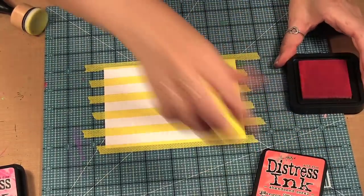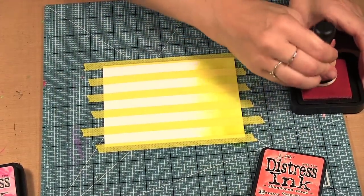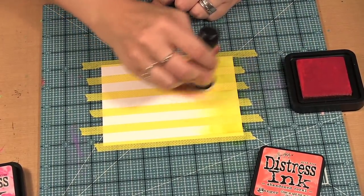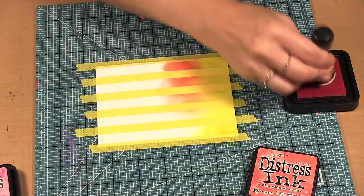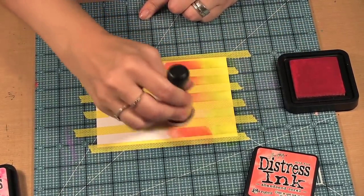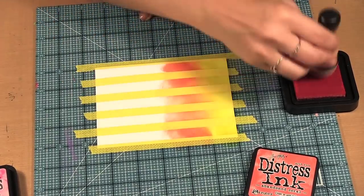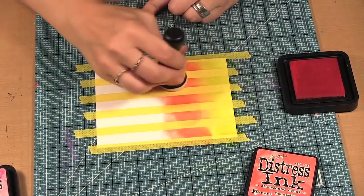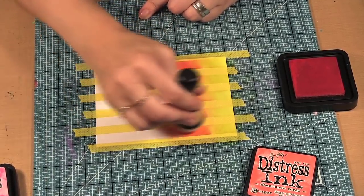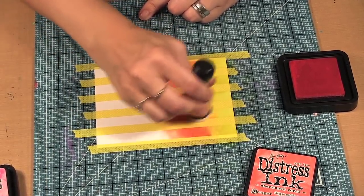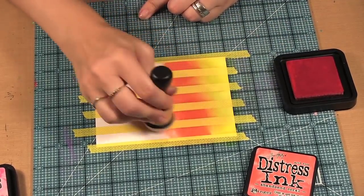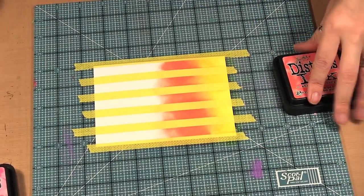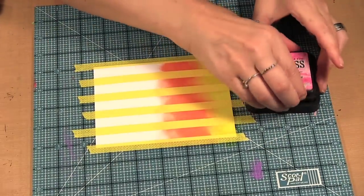So then I'm going to use the coral and I'm going to use the same sponge for this, and sort of blend it into that yellow. I don't want the abruptness. I may go back with the yellow too after. So I'm going to do picked raspberry.